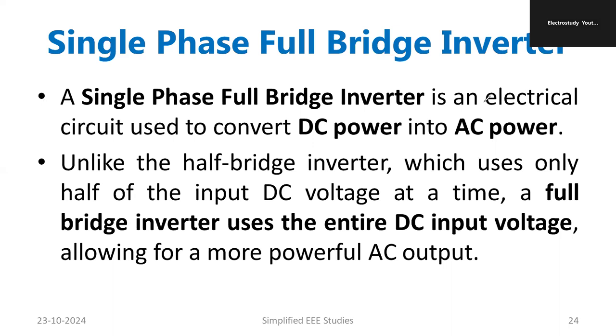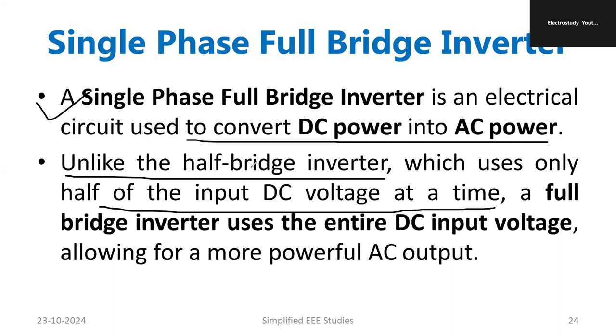A single-phase full bridge inverter is a power electronic device which is used to convert DC power into AC power. Unlike the half bridge inverter, the main problem is that it uses only half of the input DC voltage at a time. That's a major setback of the half bridge inverter. So we never get powerful AC output. To overcome that we have introduced the single-phase full bridge inverter.